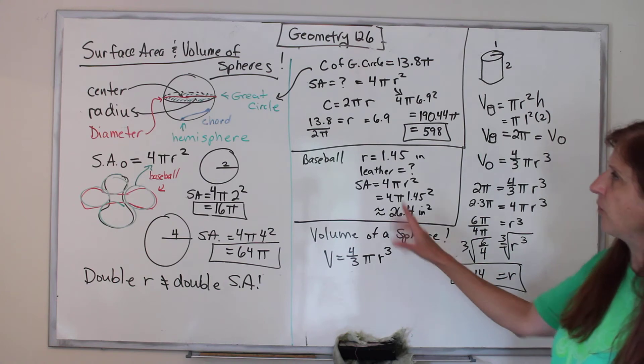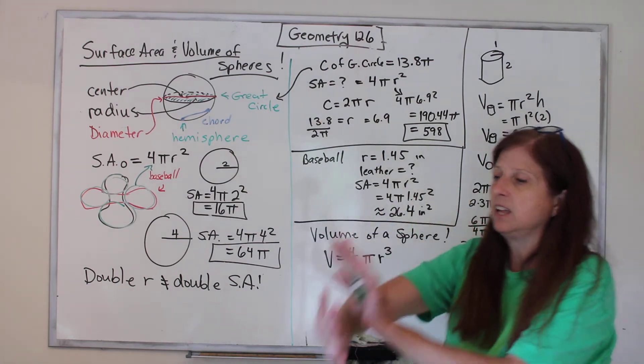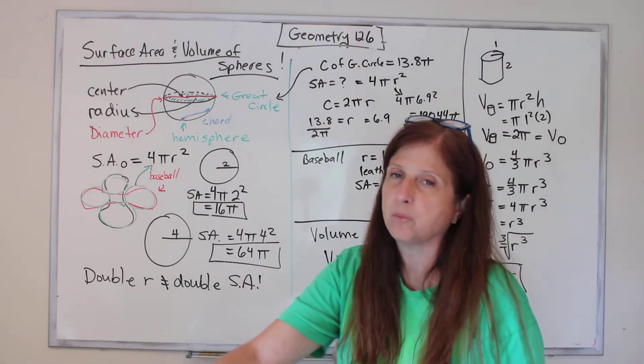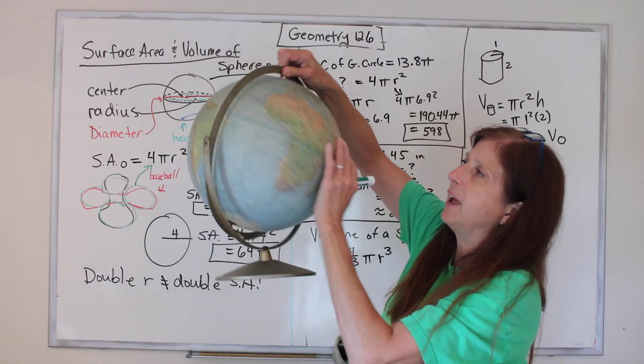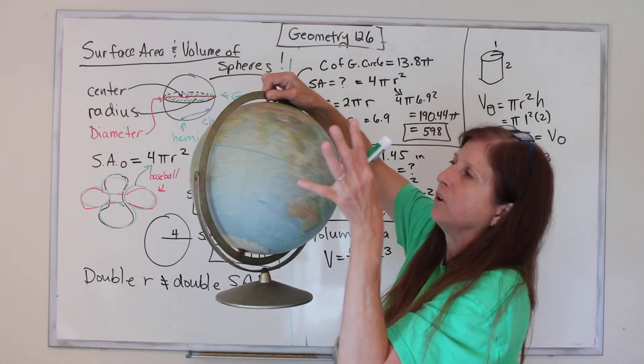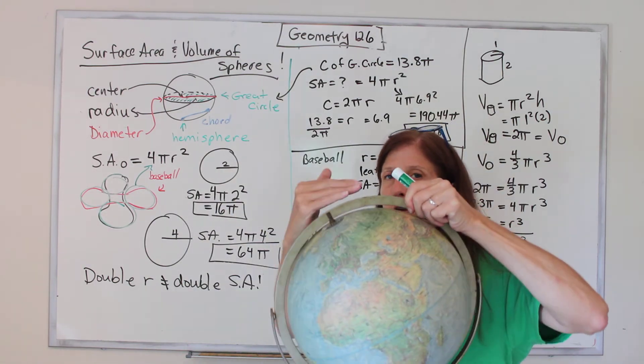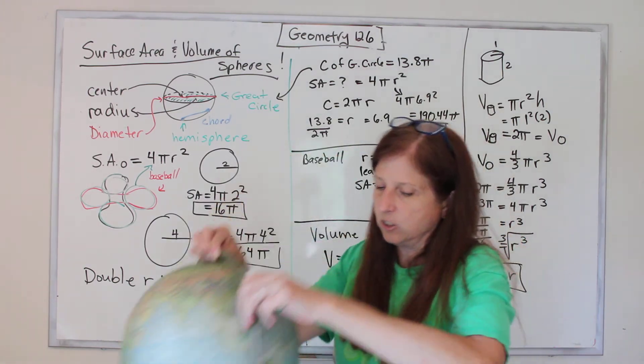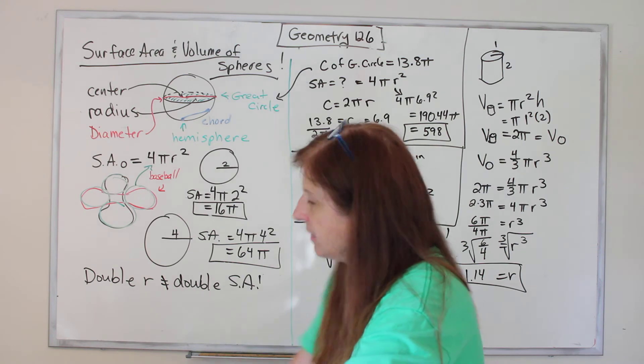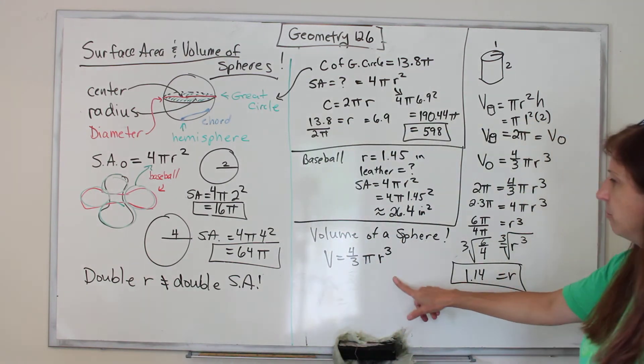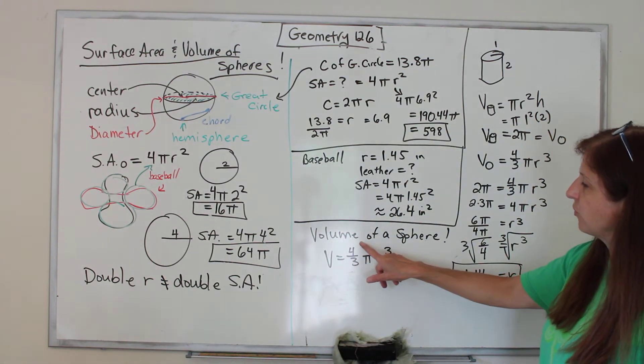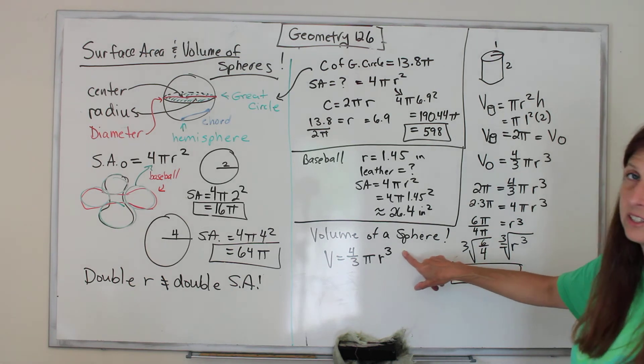Now volume of the sphere. That was all surface area—the covering, if you want to paint it or cover the sphere with paper. But if we want to fill it up with molten lava or whatever's inside the earth, then that's volume. The volume of the sphere is (4/3)πr³.